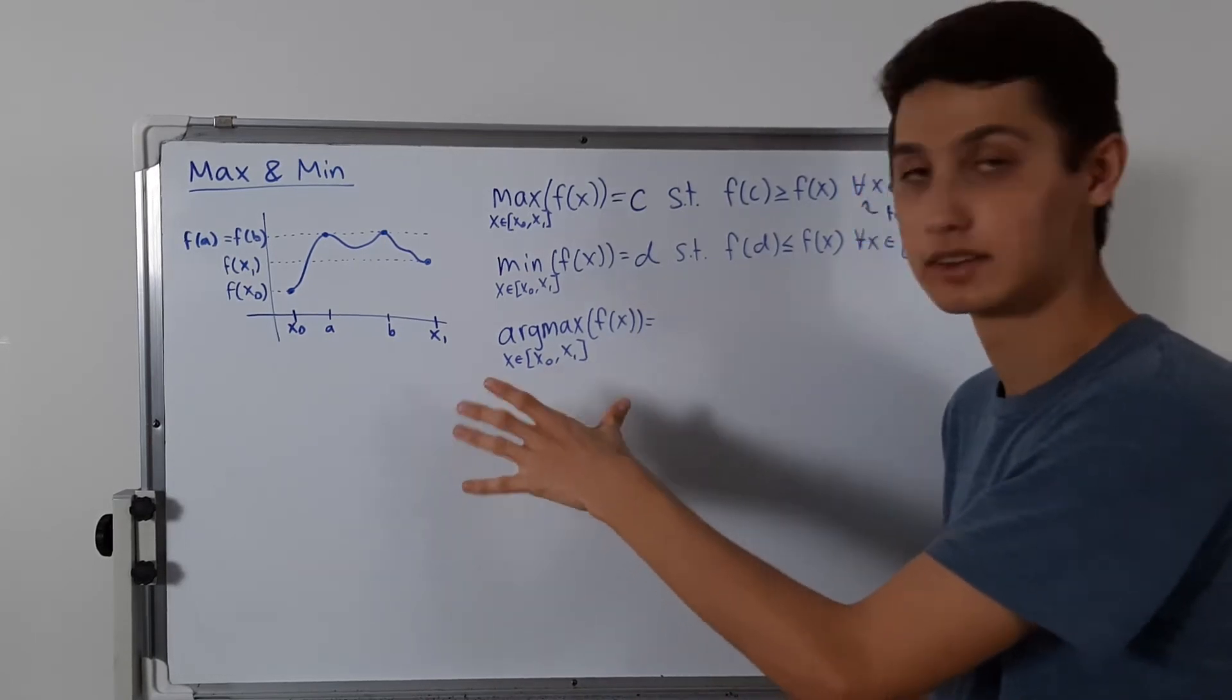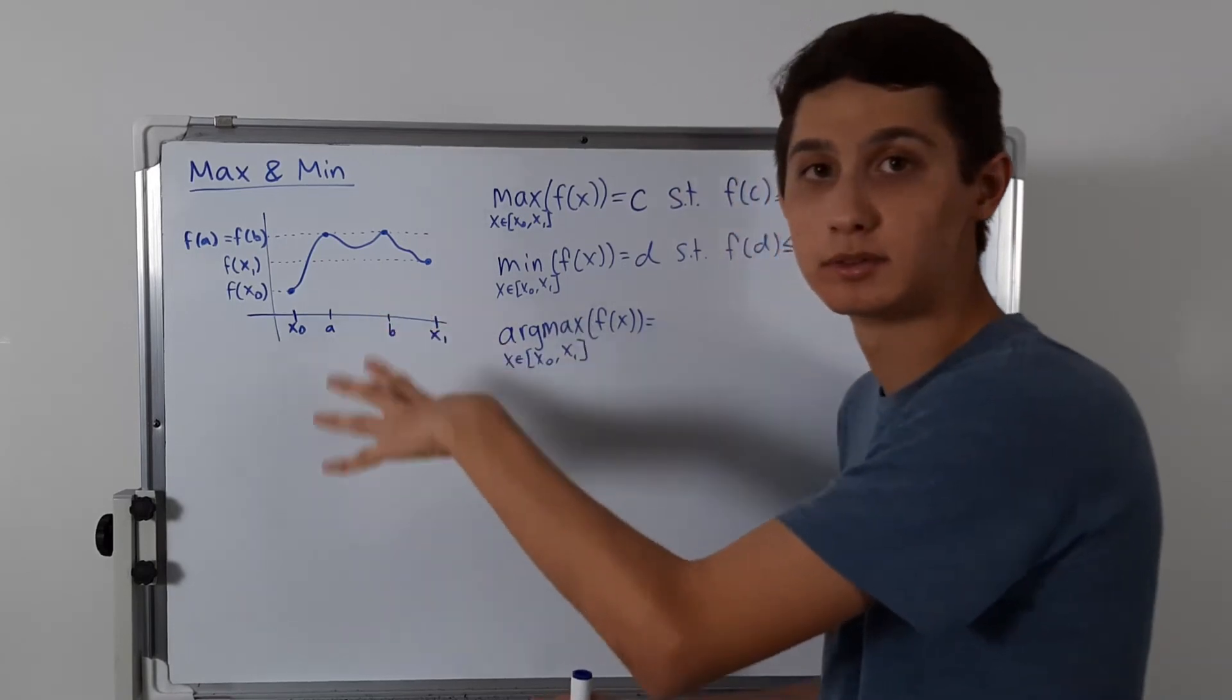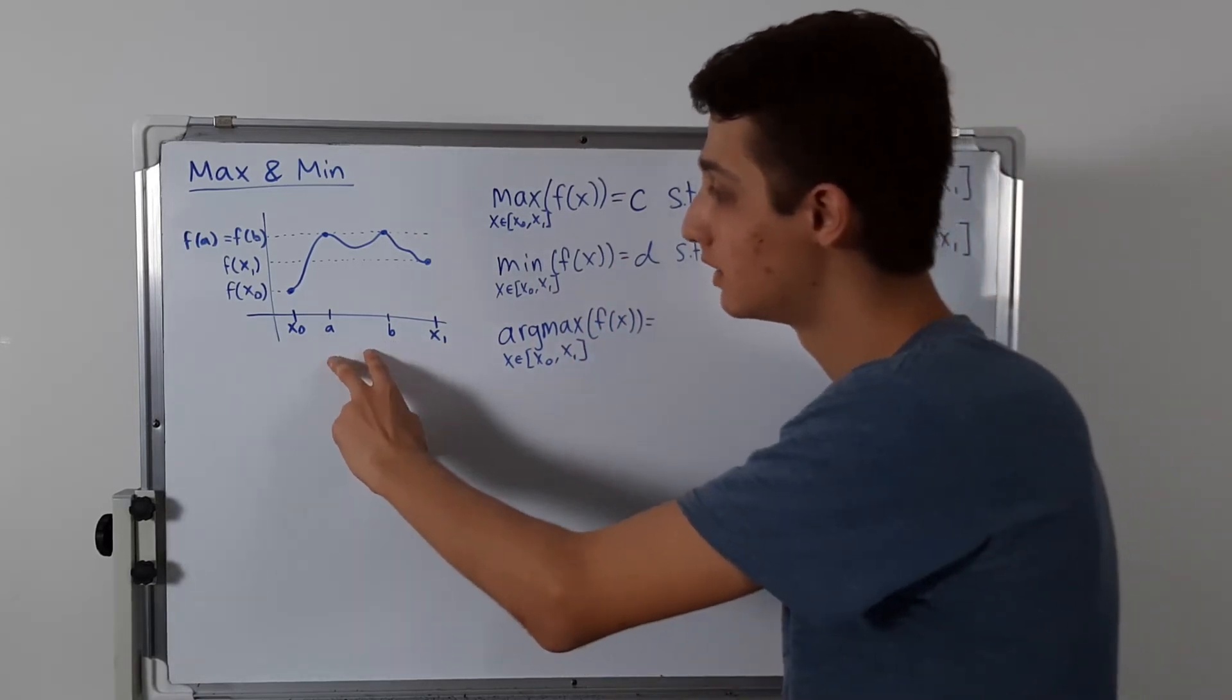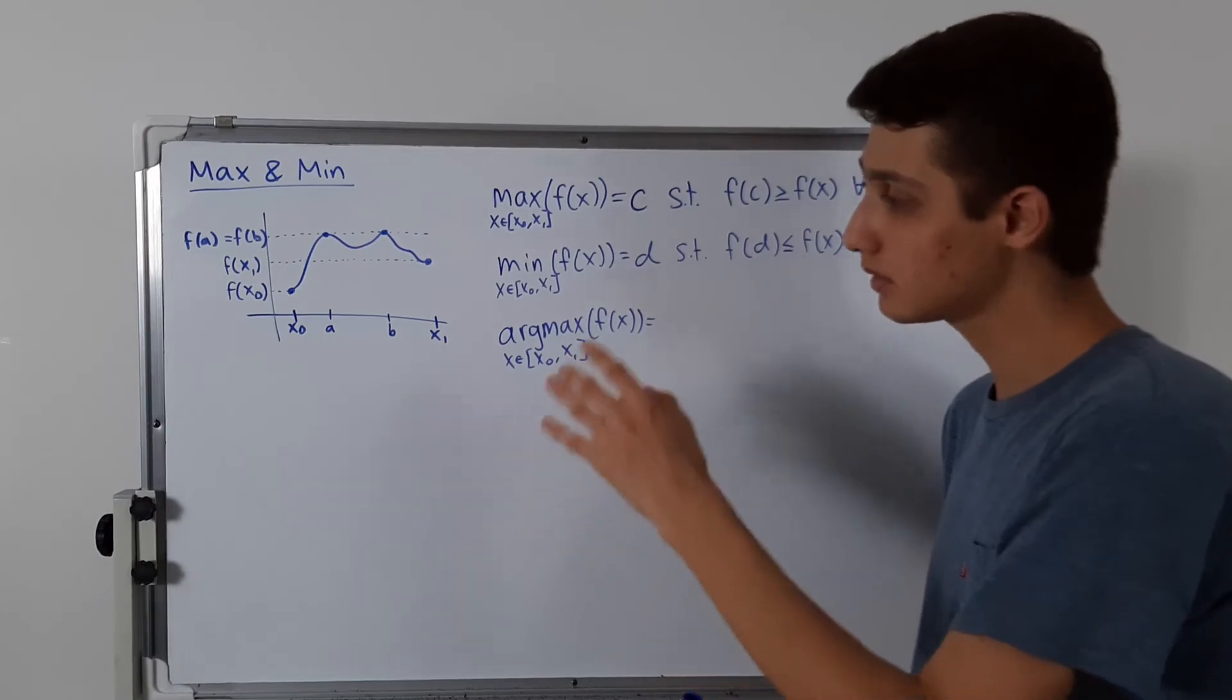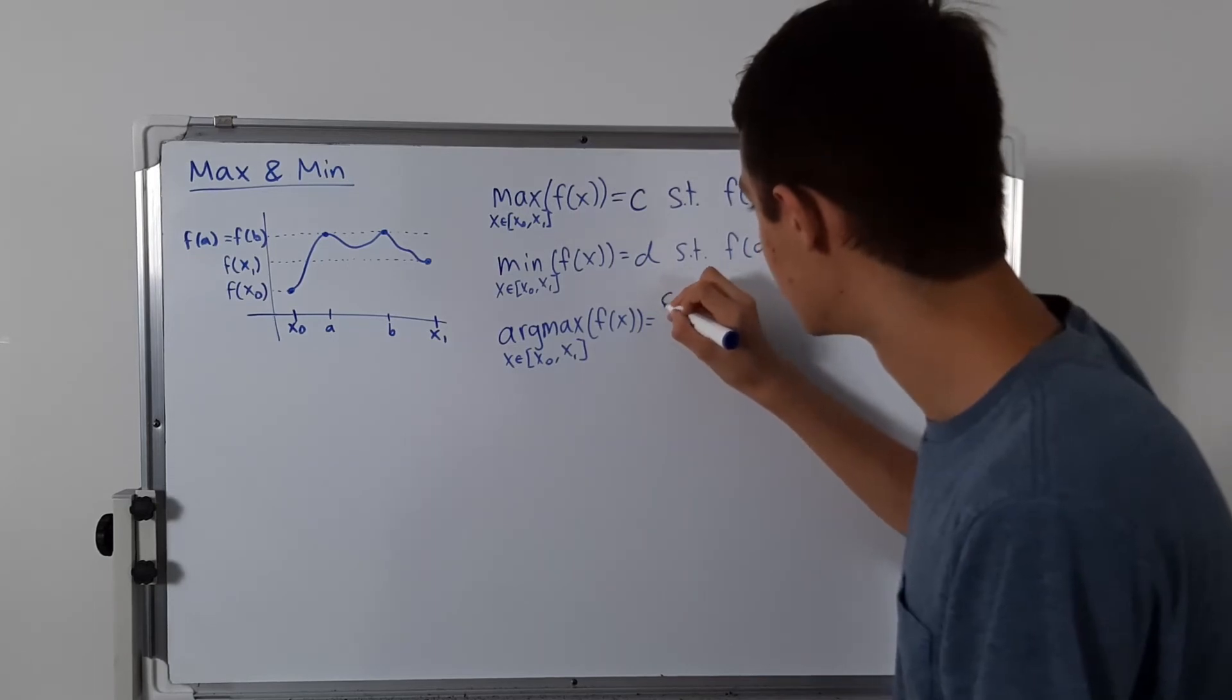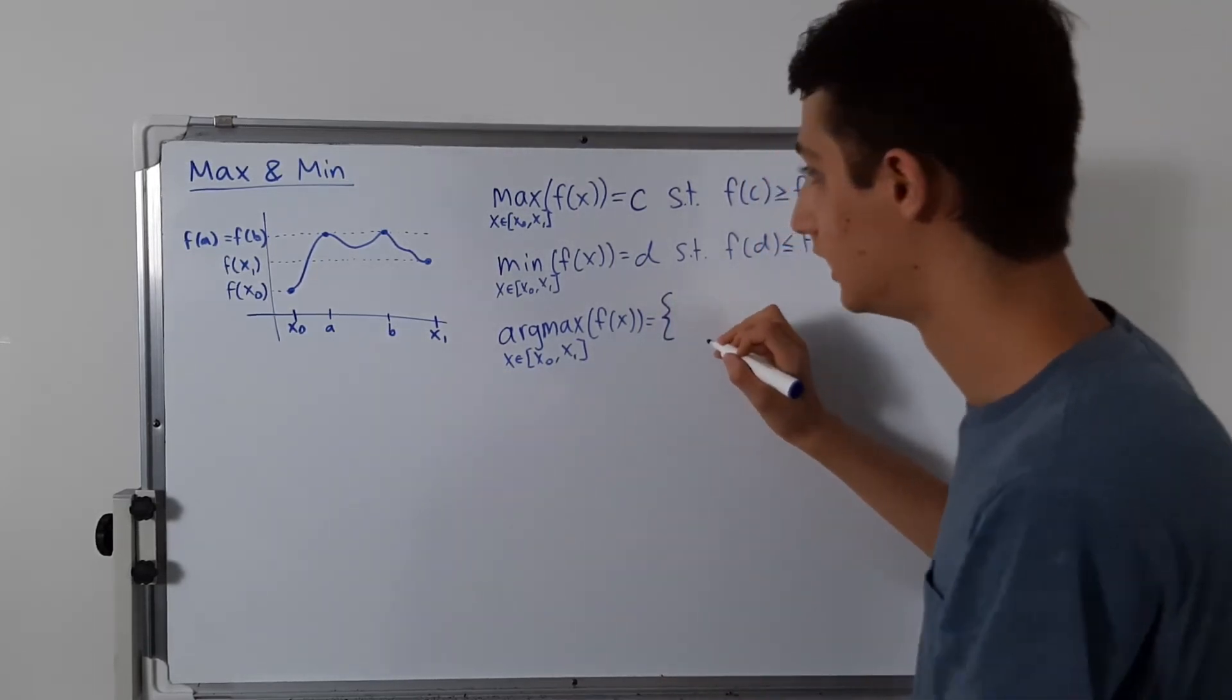Because you should kind of understand that there could be multiple values that get us to reach that maximum. There's one maximum, but there could be many values that get us to that maximum. So this is actually a set. These two are not sets, but the argmax is a set, and it contains all of these. So in this case, it is just a and b.